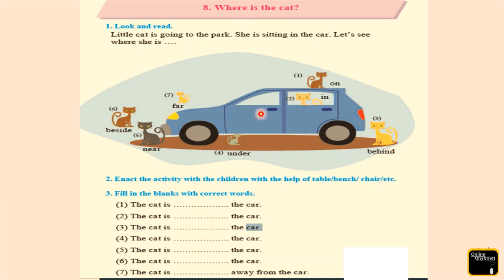So kids, these are on, in, behind, under, near, beside, and far. These all are prepositions. These prepositions tell us the exact location where the cat is.